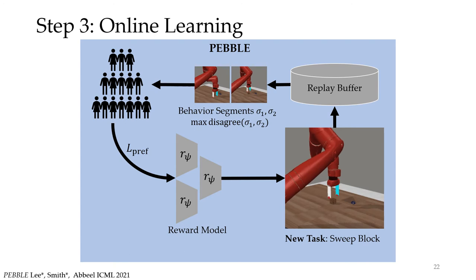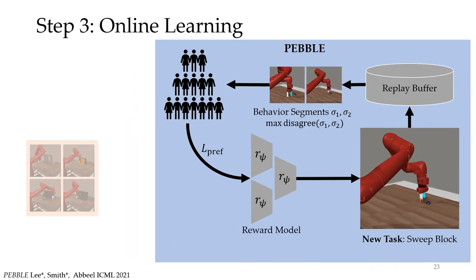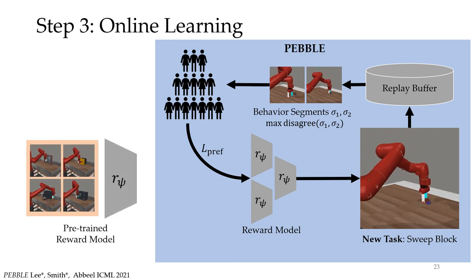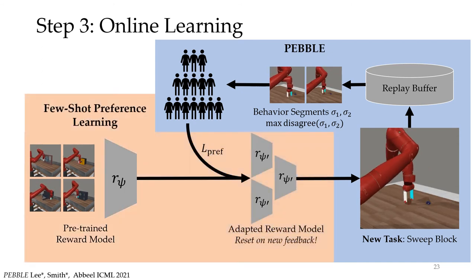Let's take Pebble and add pre-training. We start by taking our prior tasks, pre-training the reward model, as described before, and then using the human queries to adapt the reward model to the new task. Crucially, we reset the model every time we collect the feedback. We call this few-shot preference learning. Using this technique, we hope to drastically reduce the number of queries needed to learn the new task.